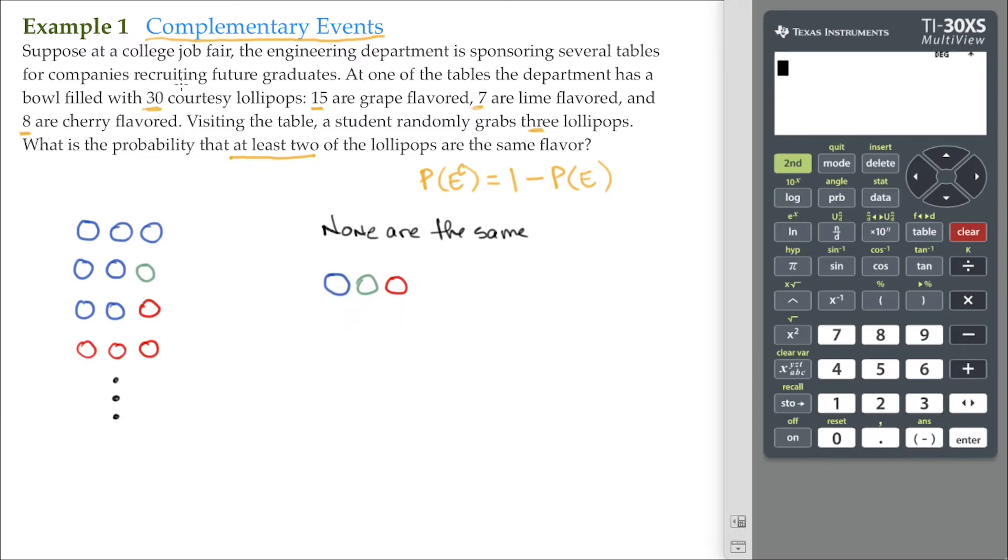So we know that there are 30 lollipops. The student randomly grabs three. That's going to be 30 choose three. So then what's the probability one of them's grape, one of them's lime, and one of them's cherry? Well, there are 15 grape. That's 15 choose one. Fifteen different ways he can grab a grape.